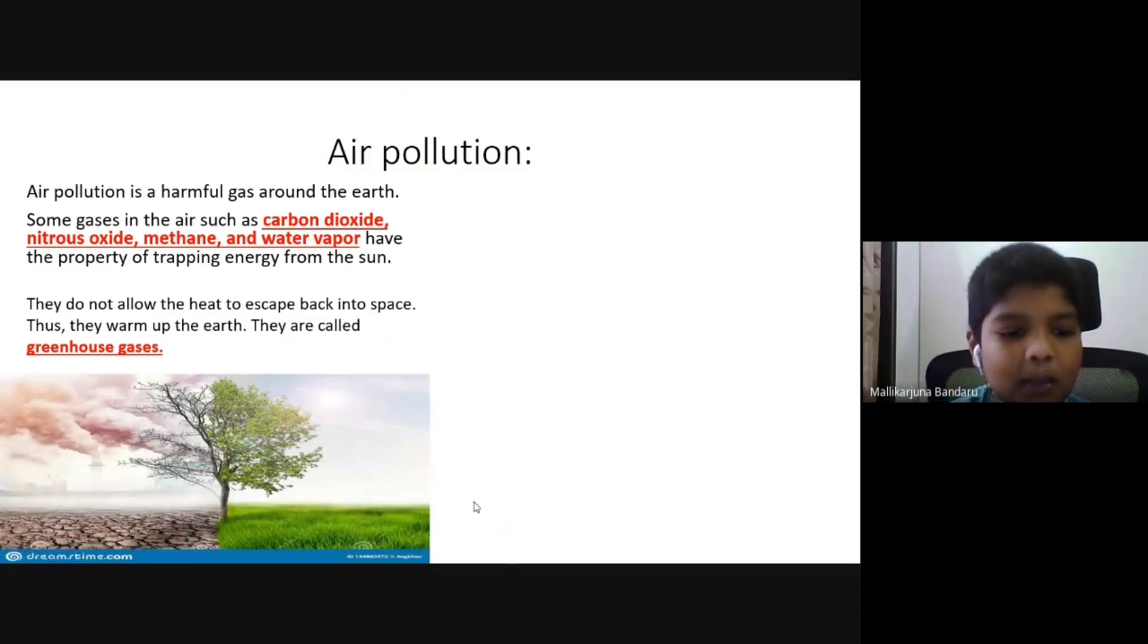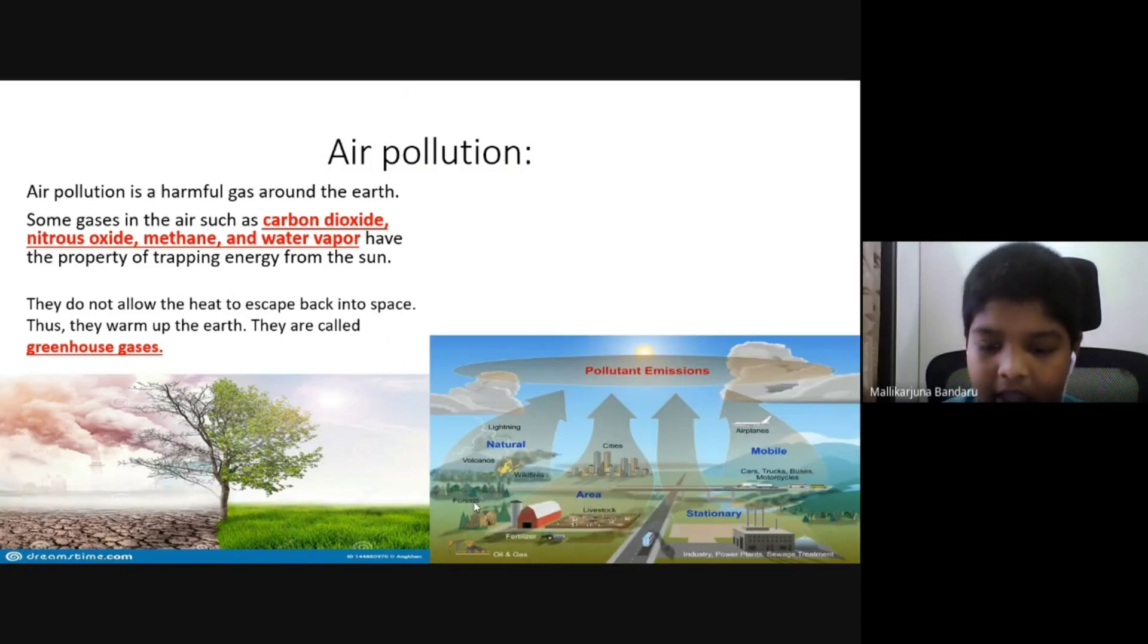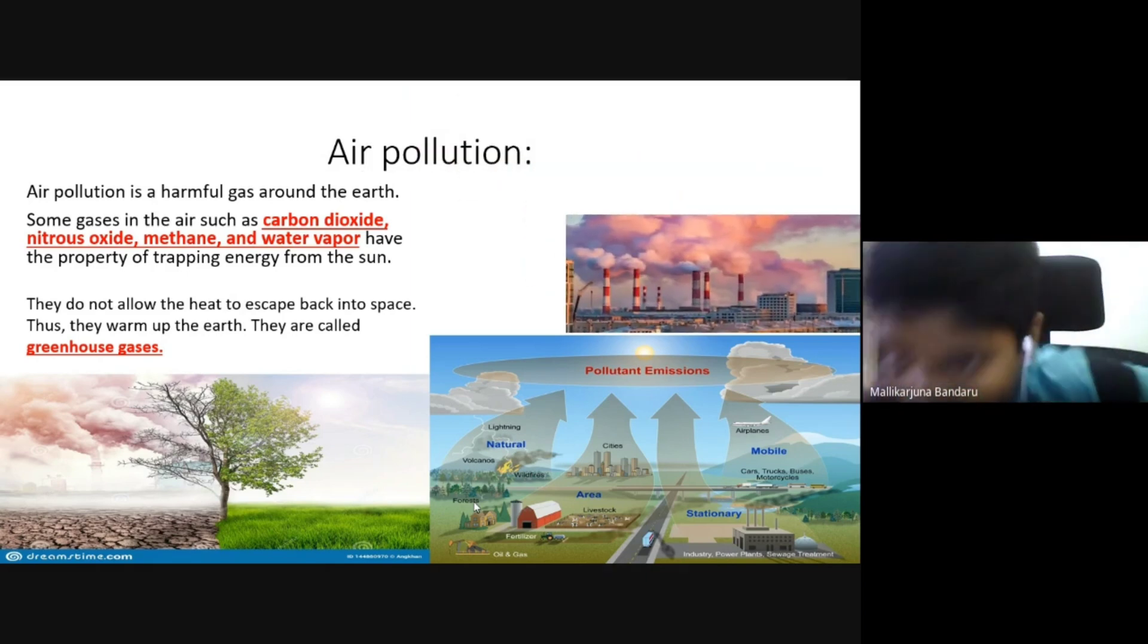Green Earth compared with Desert Earth. Natural things, stationary things like factories and mobile things like car, truck, buses and other vehicles.